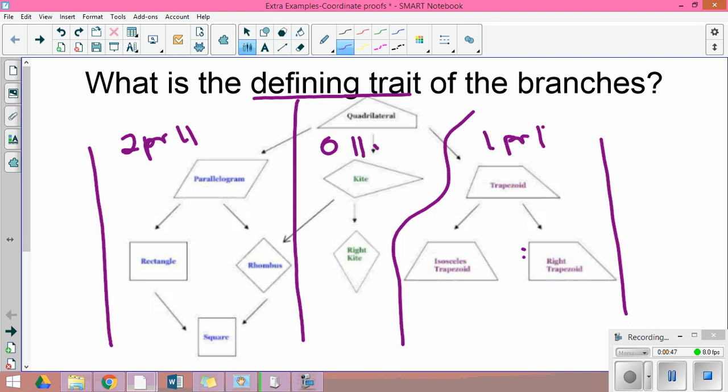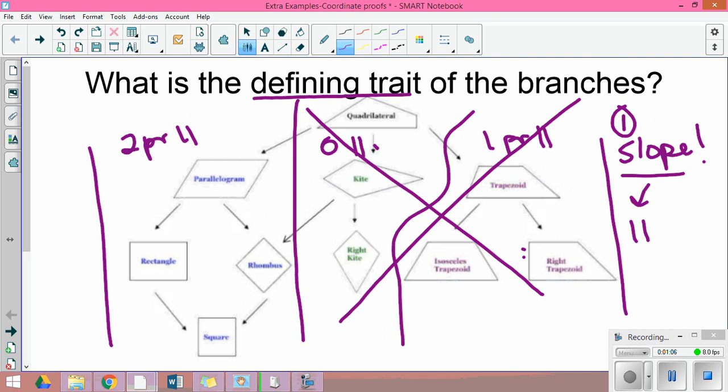When I'm faced with a coordinate proof, the first thing I'm gonna check is slope. The reason that I check slope first is it tells me parallel, and so I might be able to eliminate an entire branch of the family. If I have two pair parallel, I'm now down to four choices.